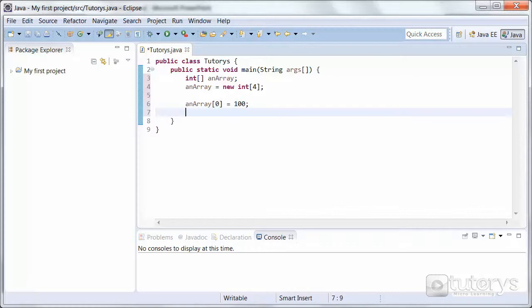So let's fill in the other elements. An array, index one, a value of 200. An array, two, equals 300.